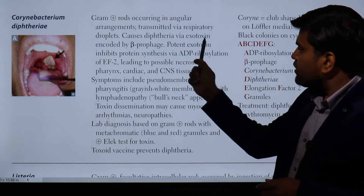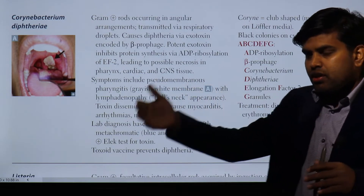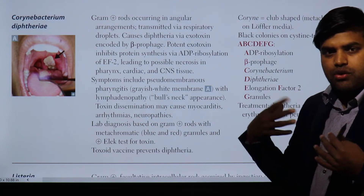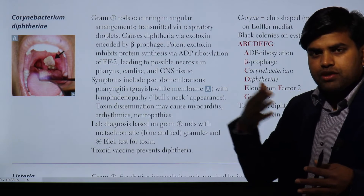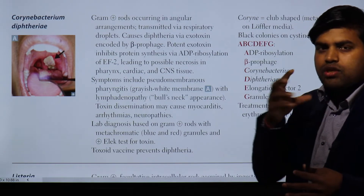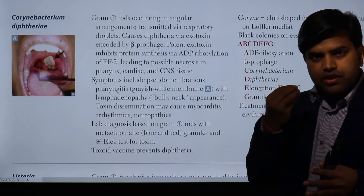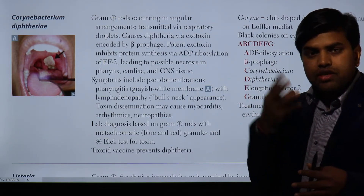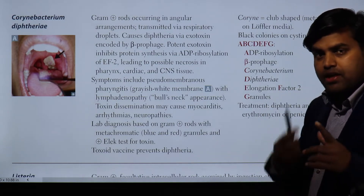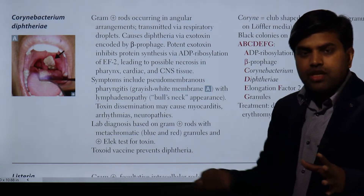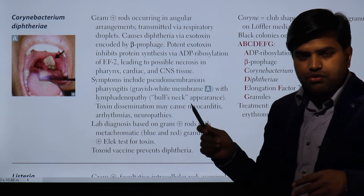It causes diphtheria via an exotoxin, so this is a disease mediated by the exotoxin. If a person is infected with diphtheria and is not immunized - antibody is not present in the body - then through close contact via respiratory droplets, it gets into the respiratory tract and into the throat. In the throat, it gradually forms a pseudomembrane. The bacteria remain localized there and do not invade the blood, but the toxin released by those bacteria enters the blood and then attacks the heart and nervous system, and may kill the patient.